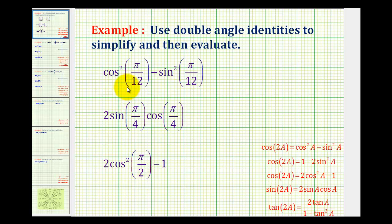The first expression is cosine squared pi divided by 12 minus sine squared of pi divided by 12, which fits the form of this first identity. Notice on the right side, we have cosine squared A minus sine squared A is equal to cosine of two A.